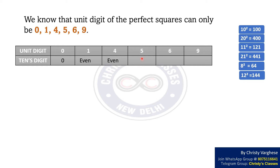Now, consider the case when the unit digit is 5. Consider 15² = 225 and 5² = 25. In both these cases, the unit digit is 5, and the tenth digit is 2. Therefore, here the tenth digit is 2.